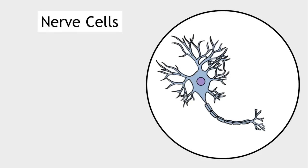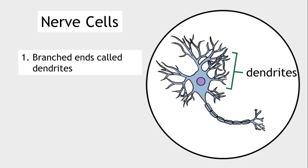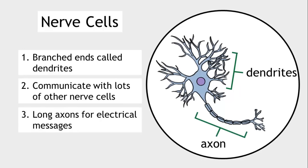Nerve cells are specialised in that they have branched endings called dendrites. This is so they can communicate with lots of other nerve cells. You will also notice they have long axons along which the electrical message can travel.